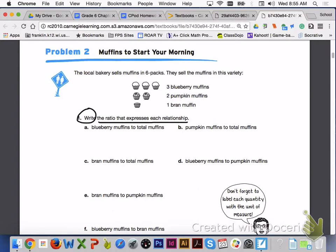Turn to problem 2 on page 310, Muffins to Start Your Morning. The local bakery sells muffins in 6 packs. They sell the muffins in this variety: 3 blueberry muffins, 2 pumpkin muffins, and 1 bran muffin. Answer number 1, letters A through F with your group members, and don't forget to label each quantity with the unit of measure.